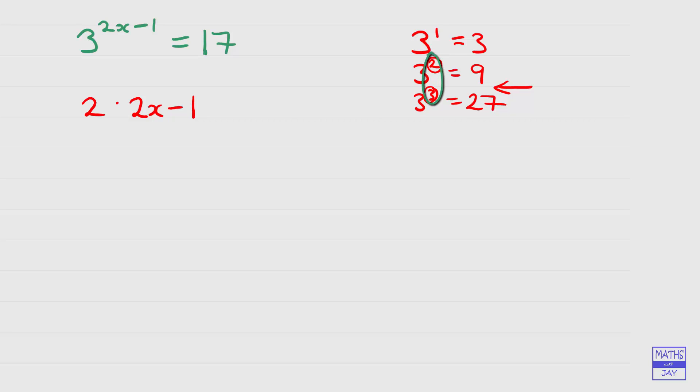So we can write that down like this: 2 is less than 2x minus 1, which is less than 3. And then we can simplify that inequality. We can add 1 to both sides, well to all three parts of it.